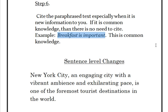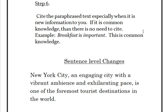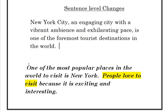Now I'm going to go over an example — sentence-level changes. Here is a sentence: "New York City, an engaging city with a vibrant ambiance and exhilarating pace, is one of the foremost tourist destinations in the world." I find that to be interesting information and I'm going to paraphrase it, looking at vocabulary and grammar. Here's my paraphrased version: "One of the most popular places in the world to visit is New York."